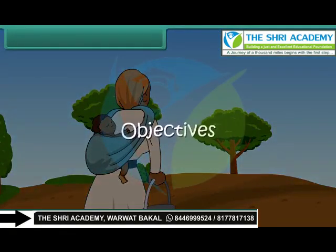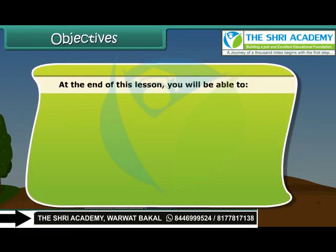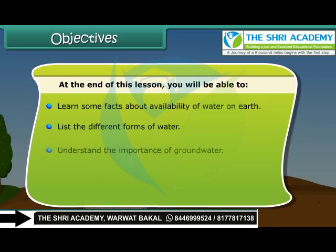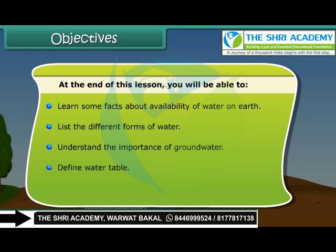Objectives. At the end of this lesson, you will be able to: learn some facts about availability of water on earth; list the different forms of water; understand the importance of groundwater; define water table; and list the factors that lead to the depletion of water table.